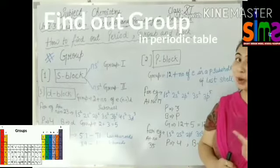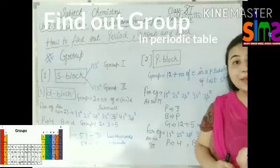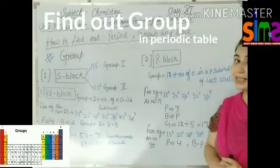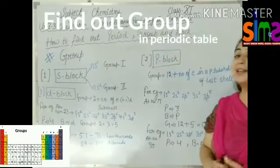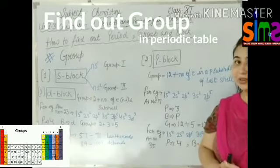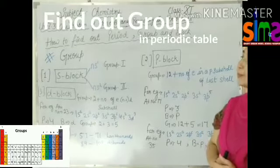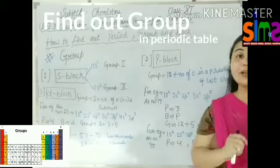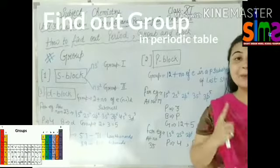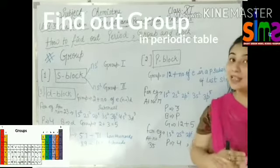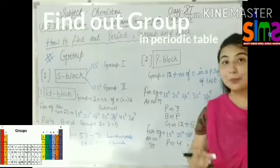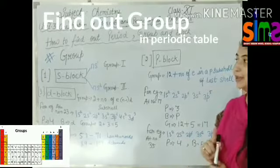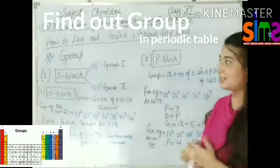We know how to find out the group. To find out the group, you need to know what is the atomic number and in which block it is present. Students, the simplest and easiest way — if we want to find out the group, we first need to know from the block which block the element's atomic number is present in.